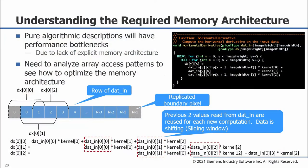In the previous video module, we discovered there was a performance bottleneck due to reading multiple times from a memory with a single read port. In order to understand how to improve the architecture, we need to look at the algorithm and do some analysis. Typically, pure algorithmic descriptions will have performance bottlenecks because there is no explicit memory architecture coded in the design. The array access patterns of the algorithm need to be analyzed in order to see how to optimize the memory architecture.